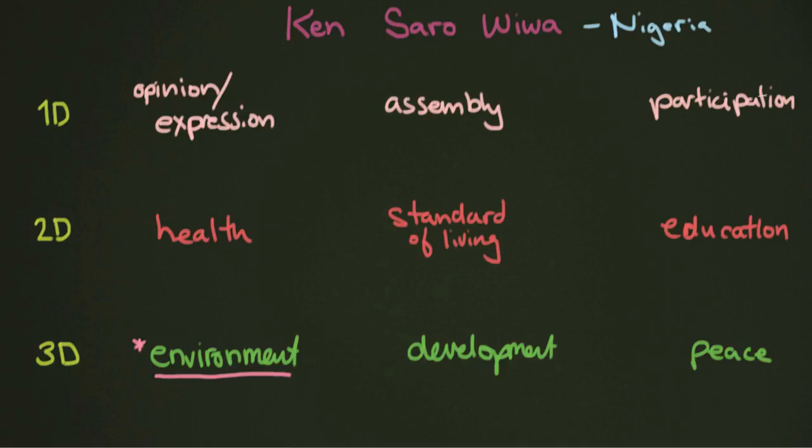Now, this fundamental pollution, this very fundamental changing of the environment, of the place where him and his family and his people, the Ogoni people came from, this environmental change obviously would have an effect on their development. Because when the environment is in rough shape, well, development is going to be hard as well. This also has a pretty destabilizing effect on peace in the region. So there's lots of strife and conflict in the area.